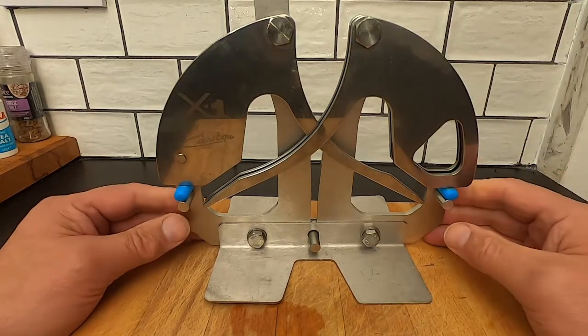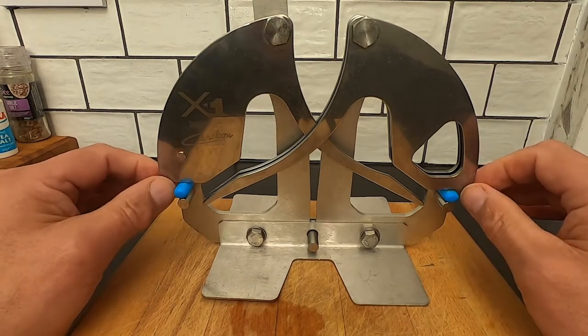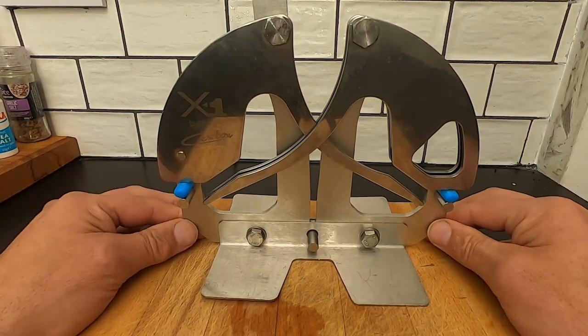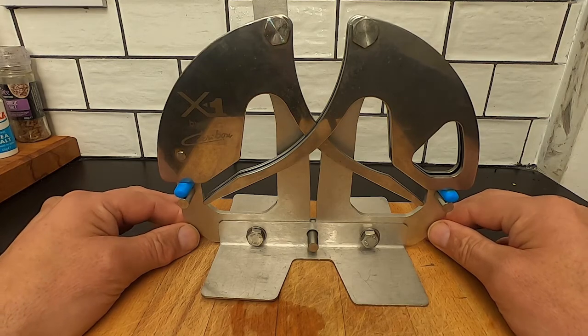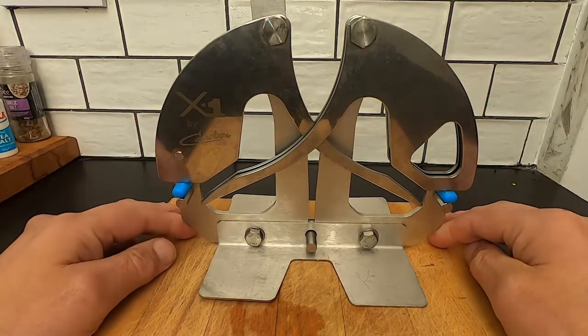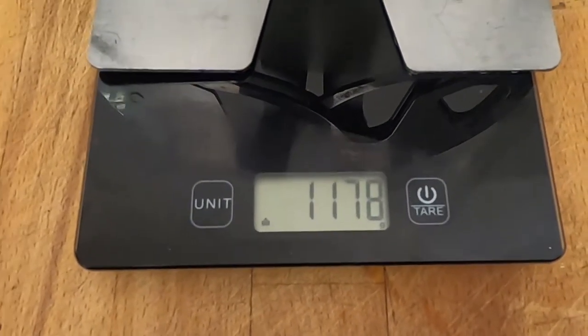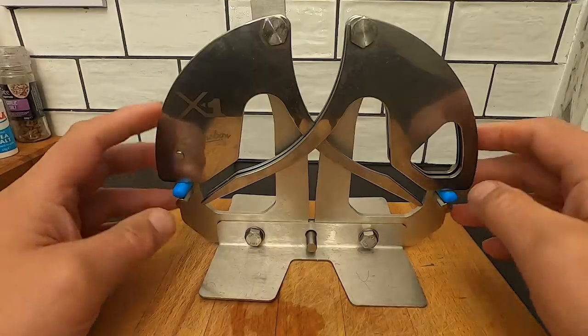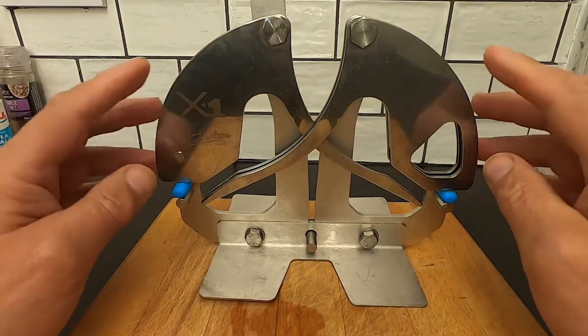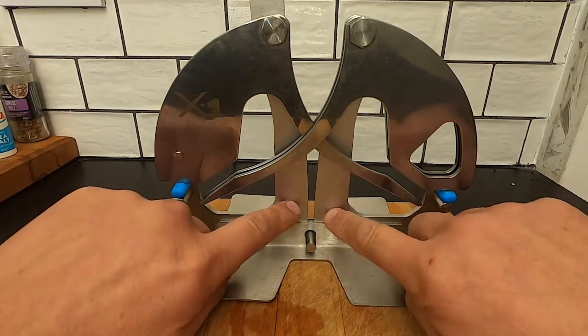So guys, just to give you a little bit of a description of this edge maintenance tool. This is the Caribou X1. It's French make. It's a very sturdy construction. As you see, the weight is about 1178 grams. It's made out of polished stainless steel combined with brushed stainless steel on the frame.